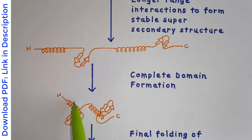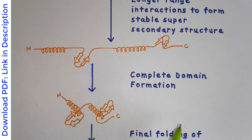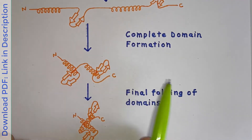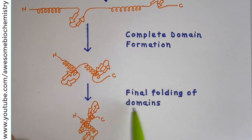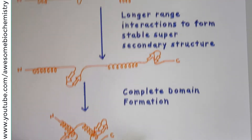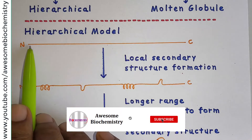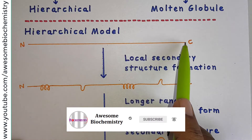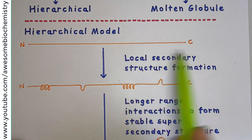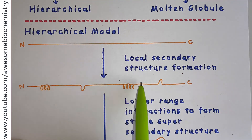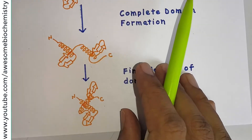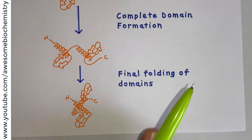A domain is the structural and functional part of the protein, as discussed in earlier videos. In the fourth and final step, there is final folding of the domains to give rise to the native conformation. The essence of the hierarchical model is that instead of the whole peptide chain folding all at once, folding occurs in local parts first, then expands to involve the complete polypeptide chain.